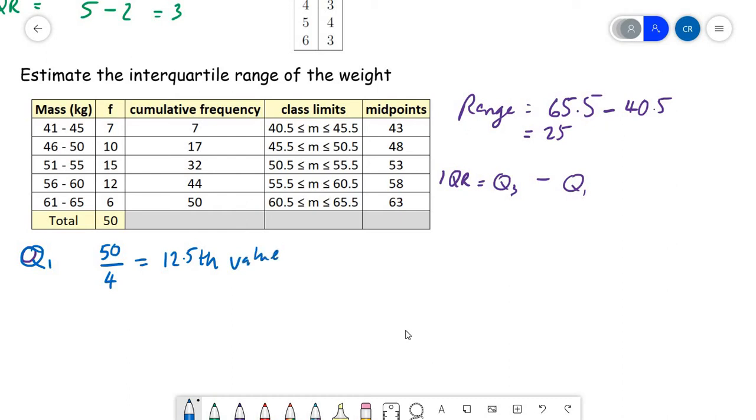Now the cumulative frequency is helpful here because it shows that we've used up seven data points in the first group, but the 12 and a half value is going to lie in the second group. And because we've had seven already, it's going to be the five and a half value in the second row of data. So to find it, we will do five and a half out of there are 10 values in that group. So we're just kind of past halfway in that group. And how wide is it? So the group is five wide. So we want to be just over halfway through a group of width five. And then we'd have to add it on to the start of the group, and the start of the group is 45.5.